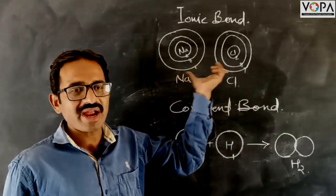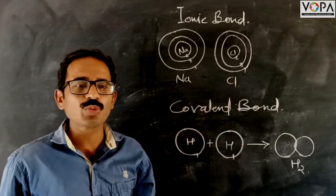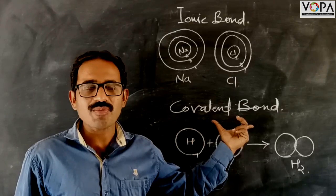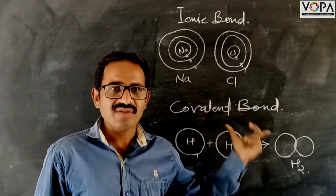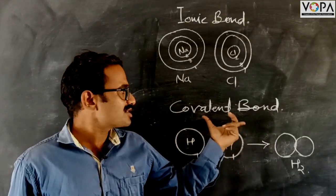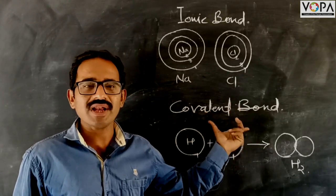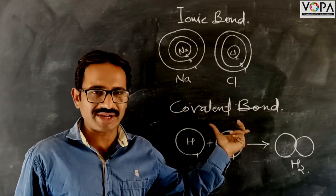Sodium and chlorine combine together to form sodium chloride. The next type of bond is covalent bond. When there is sharing of electrons between two atoms, it is called a covalent bond.